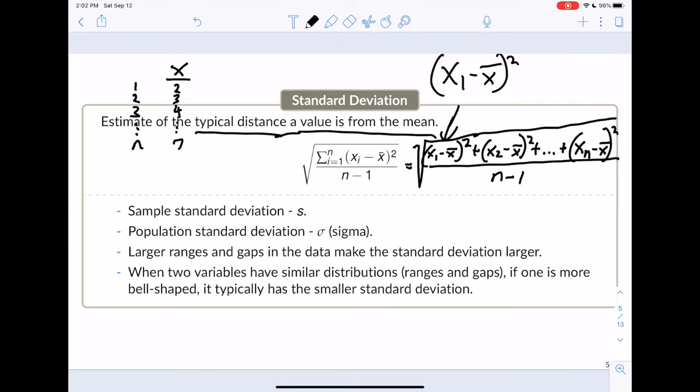So what this is going to say is, okay, we're going to add up all of the squared distances that the values are from their mean. Great. And then we're going to divide by n minus 1. So if we take all of the squared distances and add them all up...